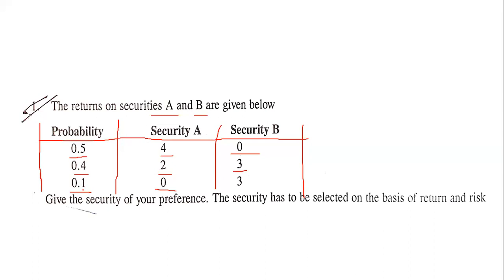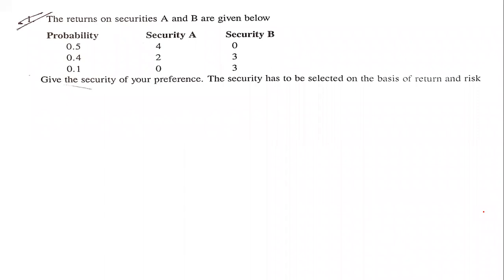For Security A: return of 4 with probability 0.5, return of 2 with probability 0.4, and return of 0 with probability 0.1. For Security B: return of 0 with probability 0.5, return of 3 with probability 0.4, and return of 3 with probability 0.1. We are asked which security should be purchased, and the selection is based on both return and risk.